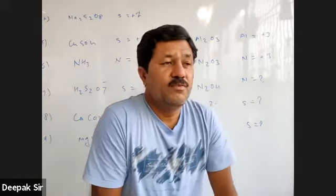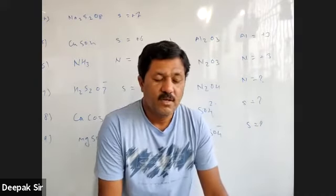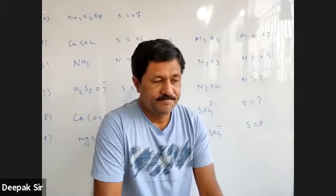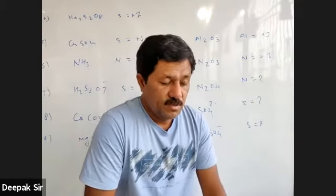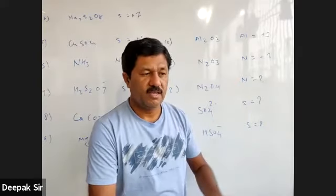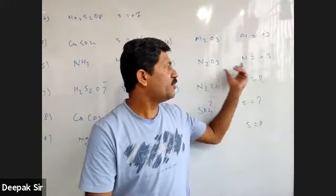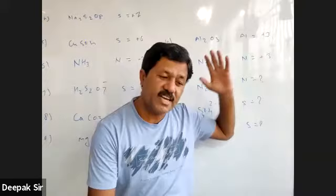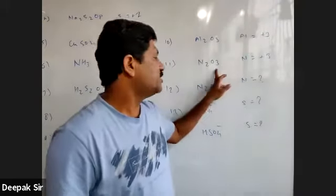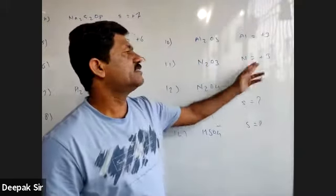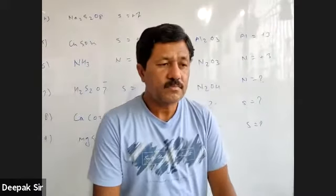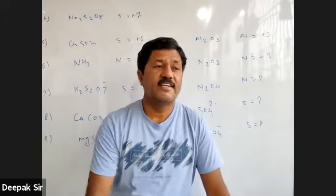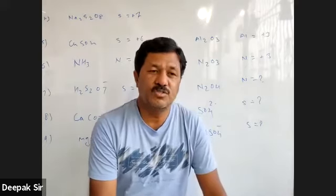The doubt raised is valid. The rule says oxidation number of non-metals is always negative and metals always positive. But numerically, as the student calculated, we get plus three. So plus three is the right answer, because oxygen has minus two, and by solving the equation, nitrogen comes out to be plus three. So the doubt is why a non-metal has a positive oxidation state.